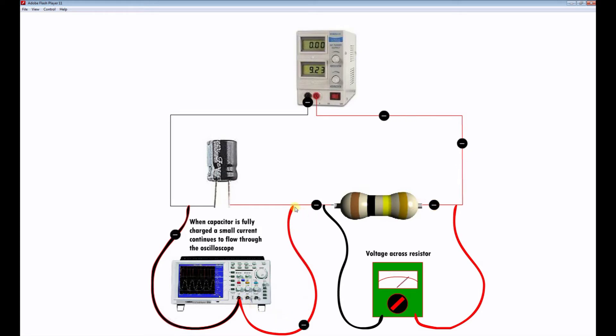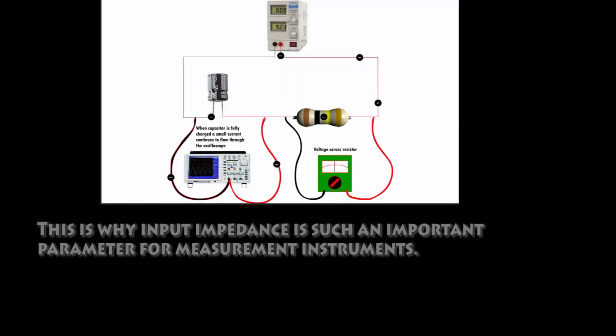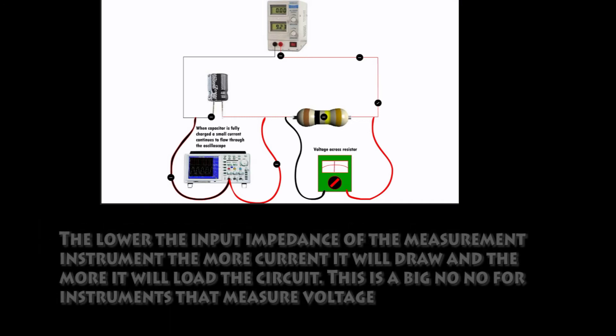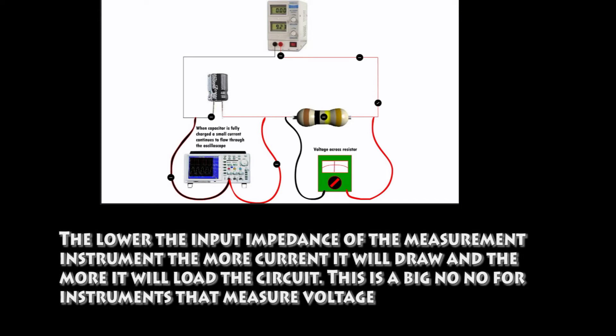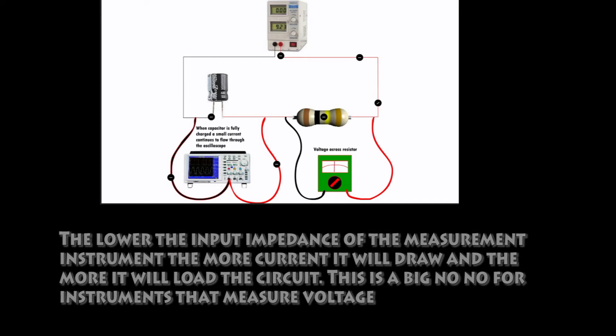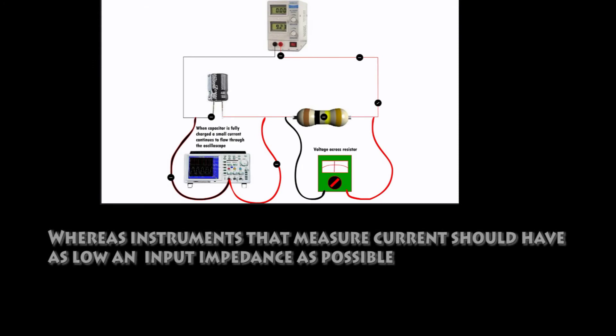And that current, therefore, causes a volt drop across the resistor in the circuit. We say that the oscilloscope loads the circuit. It introduces a small measurement error because of its input impedance. Generally speaking, for instruments that are going to measure voltage or voltage waveforms, we like them to have a high input impedance and for instruments that are going to measure current, a low input impedance.